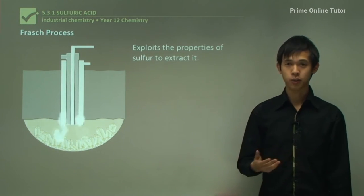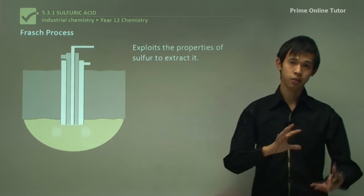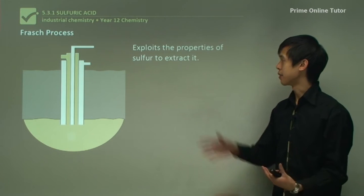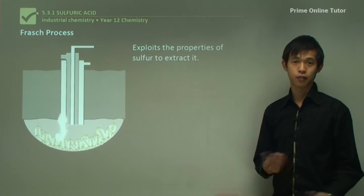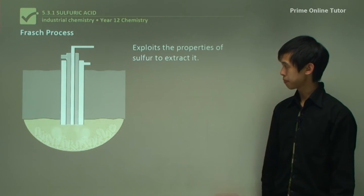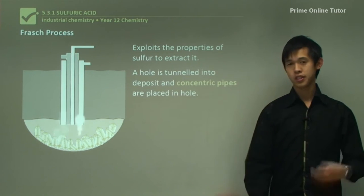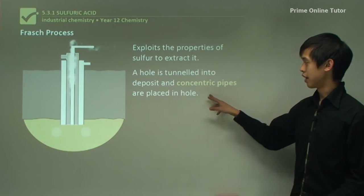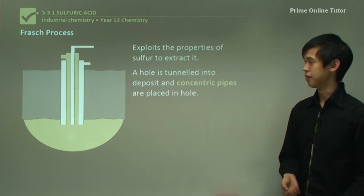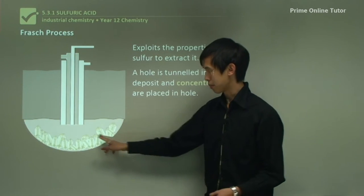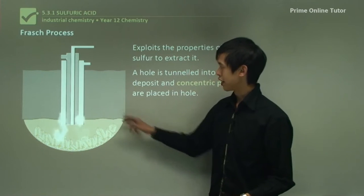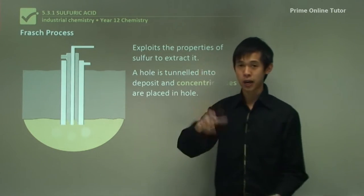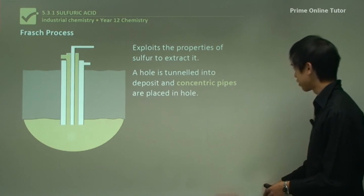We'll talk about how the Frasch process works and how it interacts with these properties. Essentially the Frasch process was designed to exploit the properties of sulfur that we've already mentioned. We start by boring a hole into the ground and then putting concentric pipes into that hole. Here's our sulfur deposit at the bottom, and here's just ground above it.